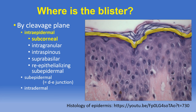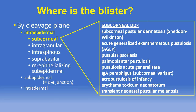Starting with superficial intraepidermal blisters, specifically sub-corneal blisters, in which the roof of the blister is essentially the stratum corneum and the floor comprises the full thickness of the nucleated epidermis. The differential diagnosis for sub-corneal vesicular and sub-corneal pustular disorders is broad, but we'll focus mostly on the first two. We've already covered psoriasis in the psoriasiform dermatitis lecture, and the last three entities are pediatric disorders that are almost never biopsied.